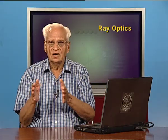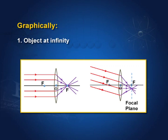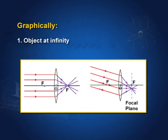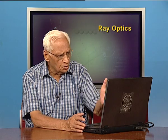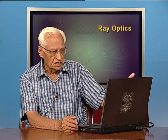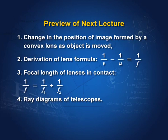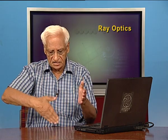As the object moves, the image position changes. When the object is at infinity, the image forms at F. When the object is between 2F and infinity, the image forms between F and 2F. When the object is exactly at 2F, the image also forms at 2F. In all these cases the images are real and can be obtained on a screen, because the rays actually meet. We will continue this study in the next lecture with many examples of the lens formula 1 by V minus 1 by U equals 1 by F.